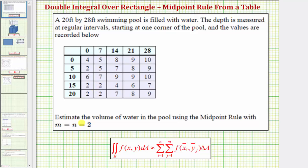We're asked to estimate the volume of the water in the pool using the midpoint rule, with m equals n equals two. Because both m and n are equal to two, this tells us we'll be dividing this length into two equal partitions, as well as this length here. So we'll be dividing the surface area of the pool into four smaller partitions.